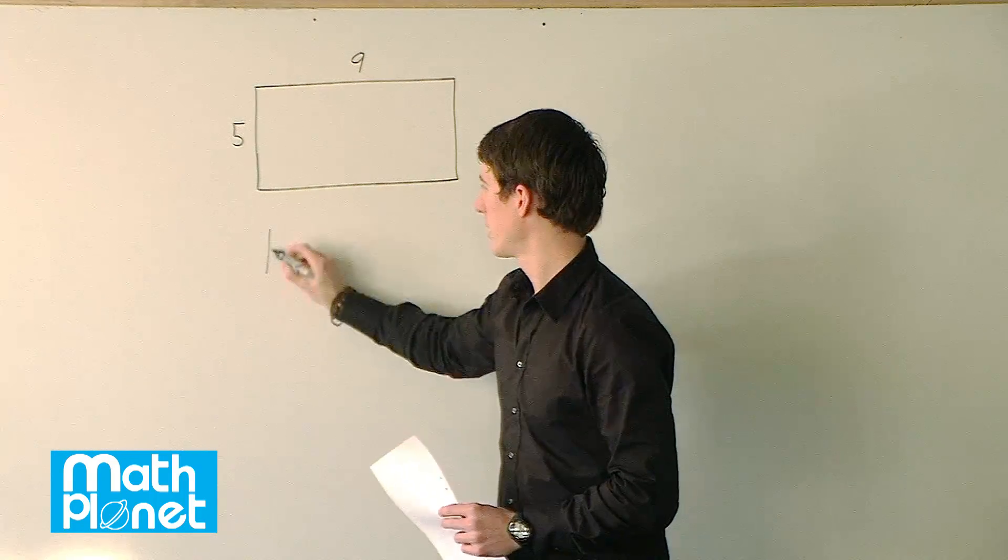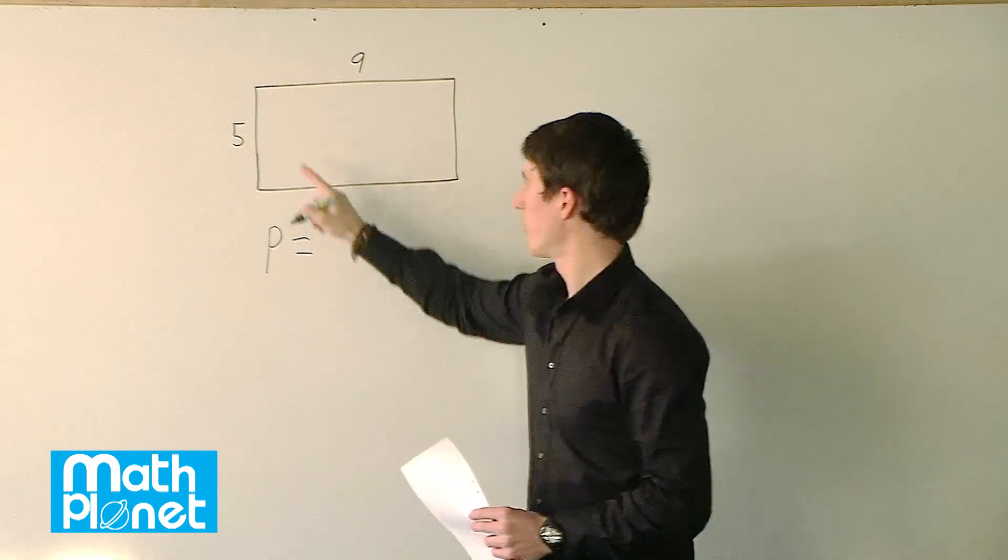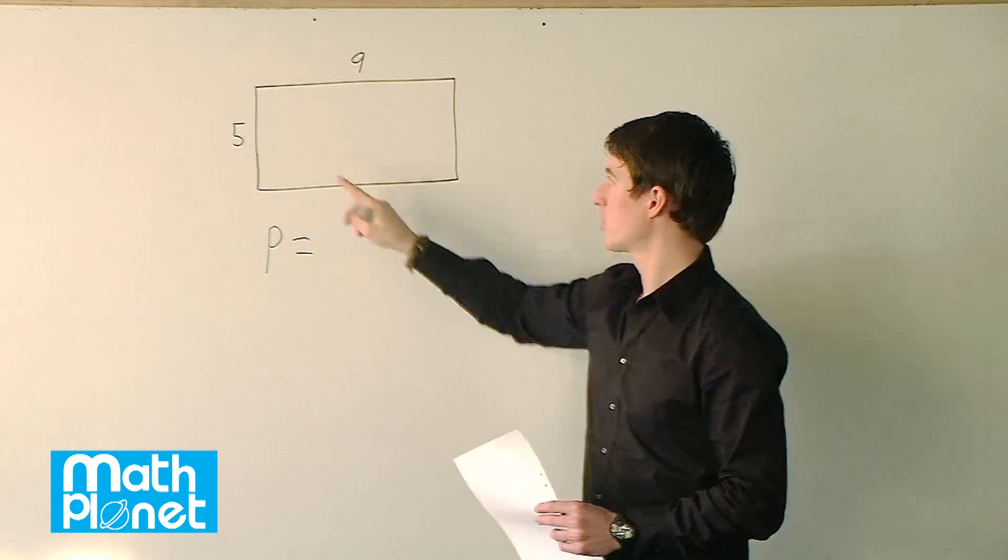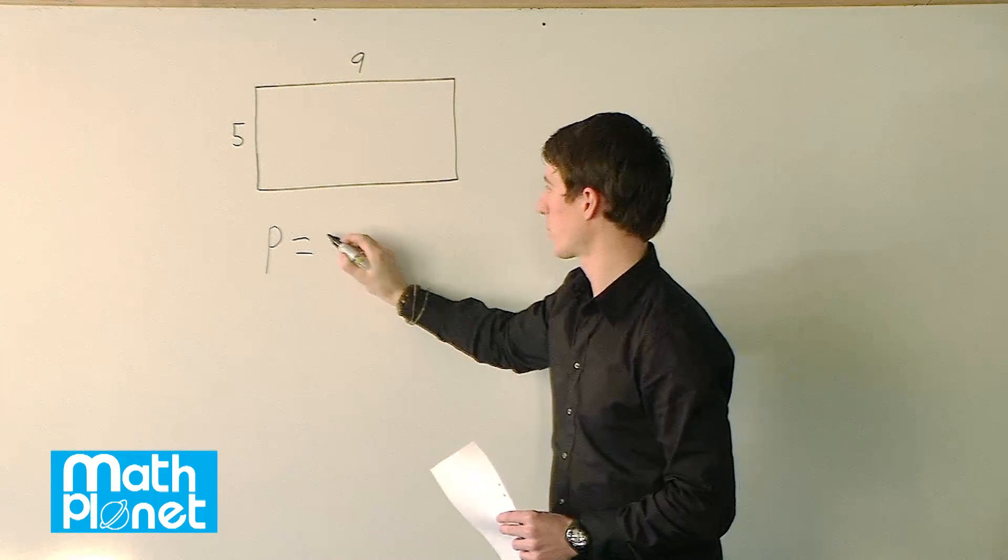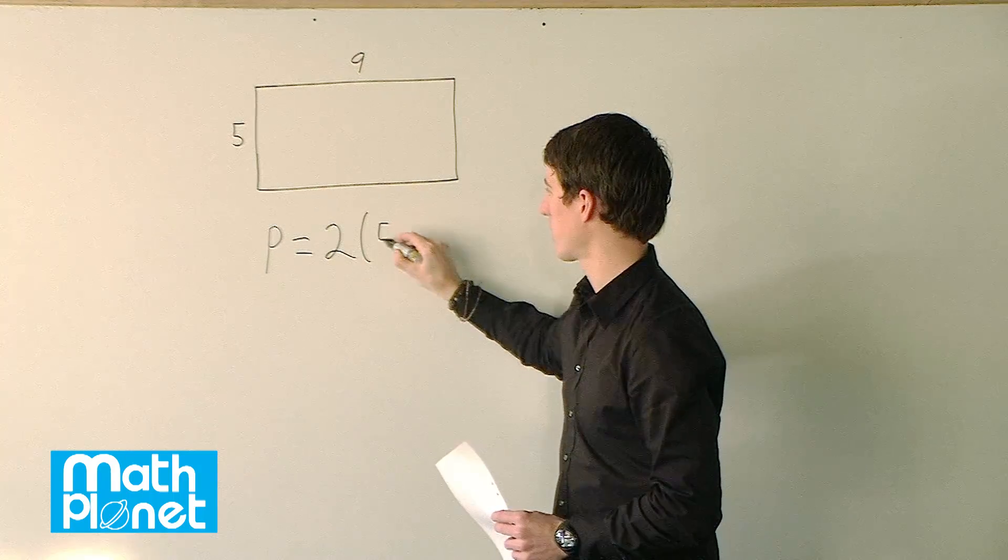So the perimeter is just the sum of all the lengths of the sides. So it's going to be two 5's and two 9's. So we can write that as this formula, 2 times 5 plus 9.